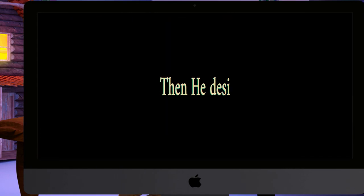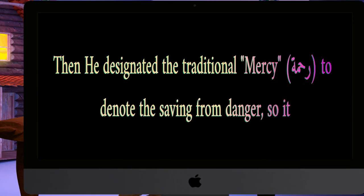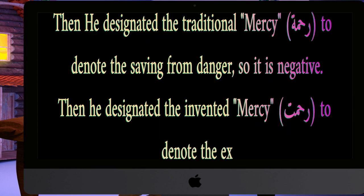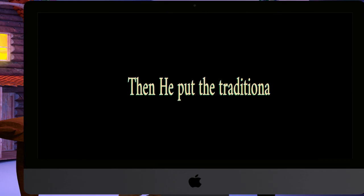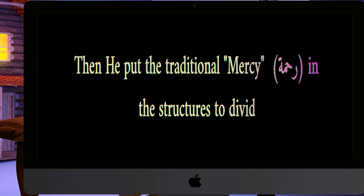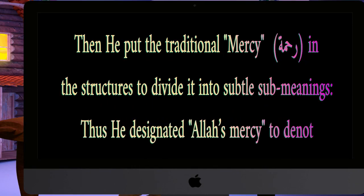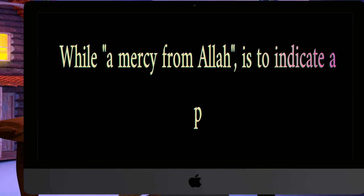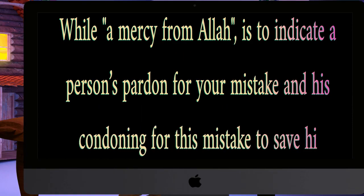Then he designated the traditional mercy to denote the saving from danger — so it is negative. Then he designated the invented mercy to denote the exceptional grace — so it is positive. Then he put the traditional mercy in structures to divide it into subtle sub-meanings. Thus he designated 'Allah's mercy' to denote deliverance in the hereafter from torment, while 'a mercy from Allah' indicates a person's pardon for your mistake and his condoning of that mistake to spare his punishment.